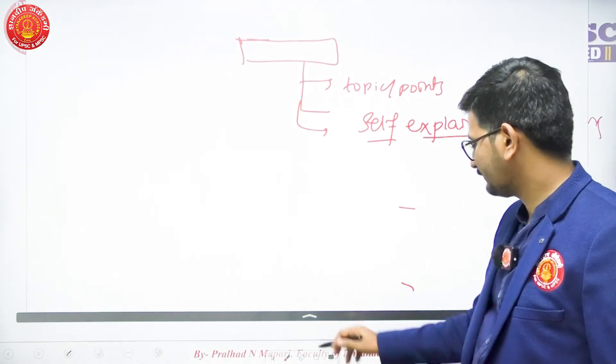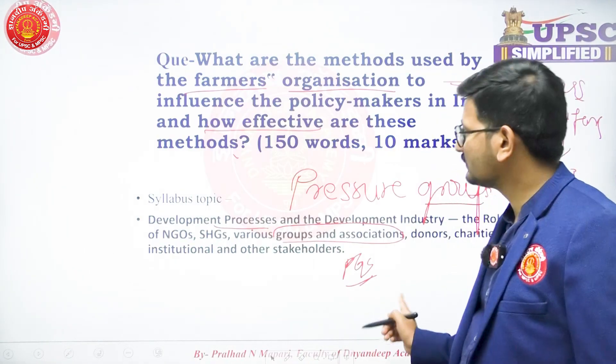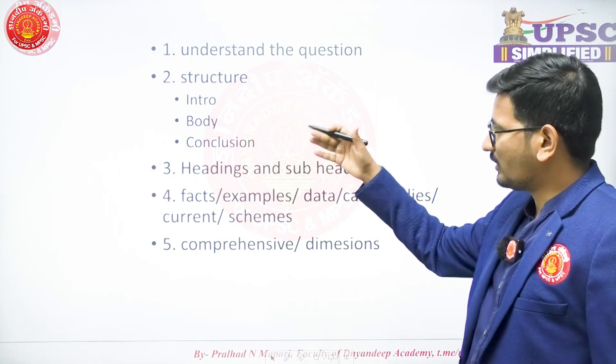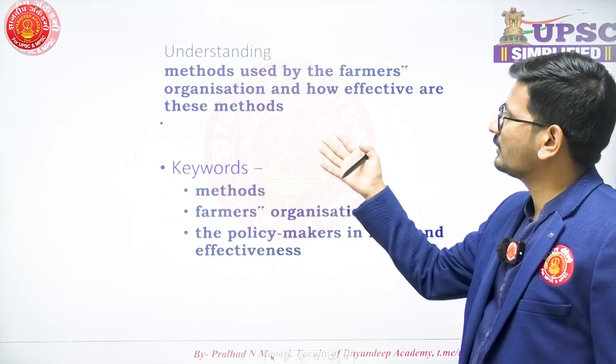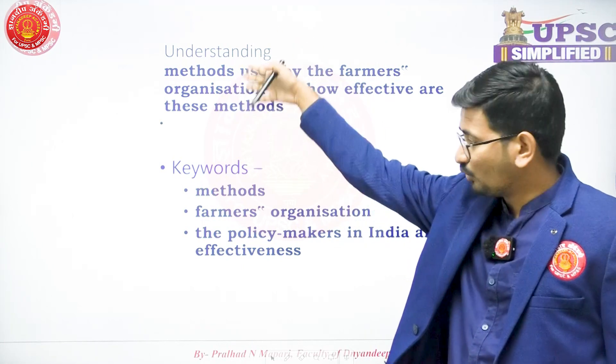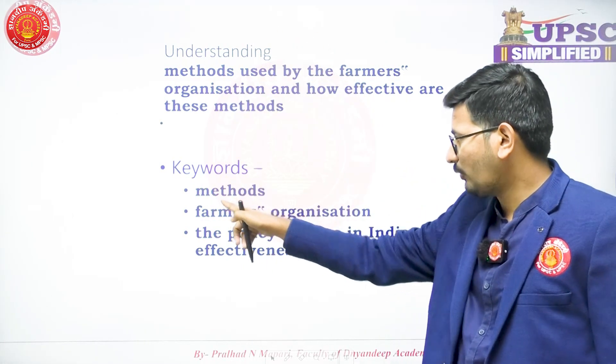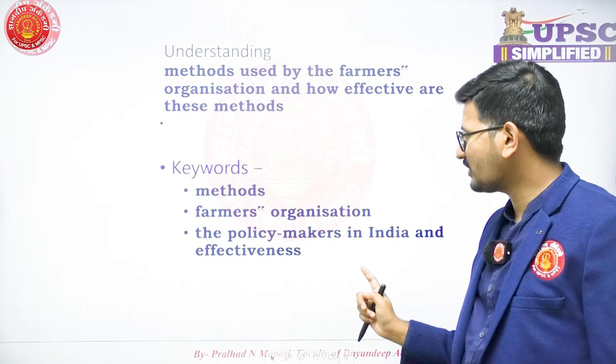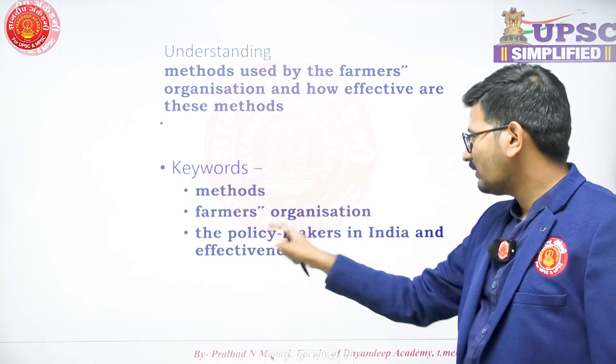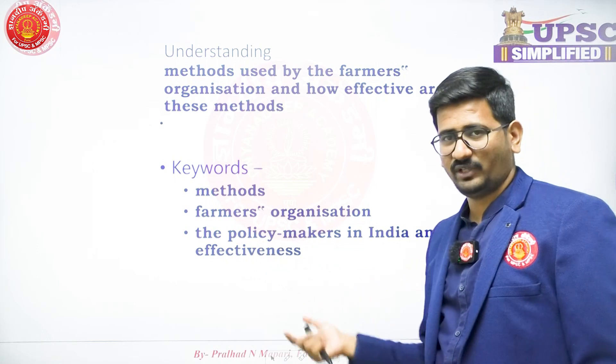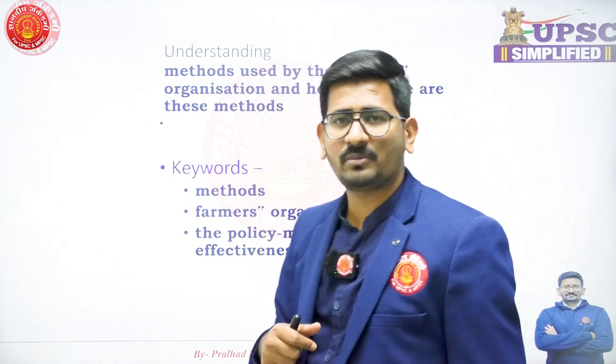Let us begin. What could be the introduction? We need to understand the question structure — body, etc. The keywords in the question are: different methods, farmer organizations as pressure groups, policy makers in India, and effectiveness. Policy makers means those people in a position to influence or create policies and play a role in their implementation.